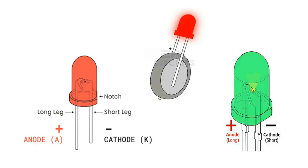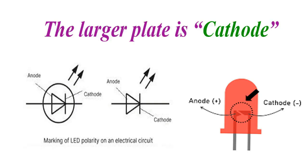Another visual cue is a flat edge or notch on the LED's casing, which indicates the negative or cathode side. Inside the LED, the larger plate is the negative or cathode, and the smaller is the positive or anode.